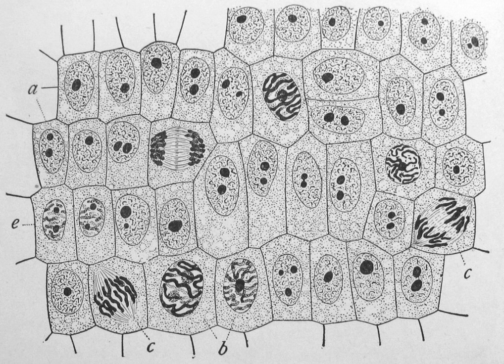The cell membrane, or plasma membrane, is a biological membrane that surrounds the cytoplasm of a cell. In animals, the plasma membrane is the outer boundary of the cell, while in plants and prokaryotes it is usually covered by a cell wall. This membrane serves to separate and protect a cell from its surrounding environment and is made mostly from a double layer of phospholipids, which are amphiphilic. Hence, the layer is called a phospholipid bilayer, or sometimes a fluid mosaic membrane.